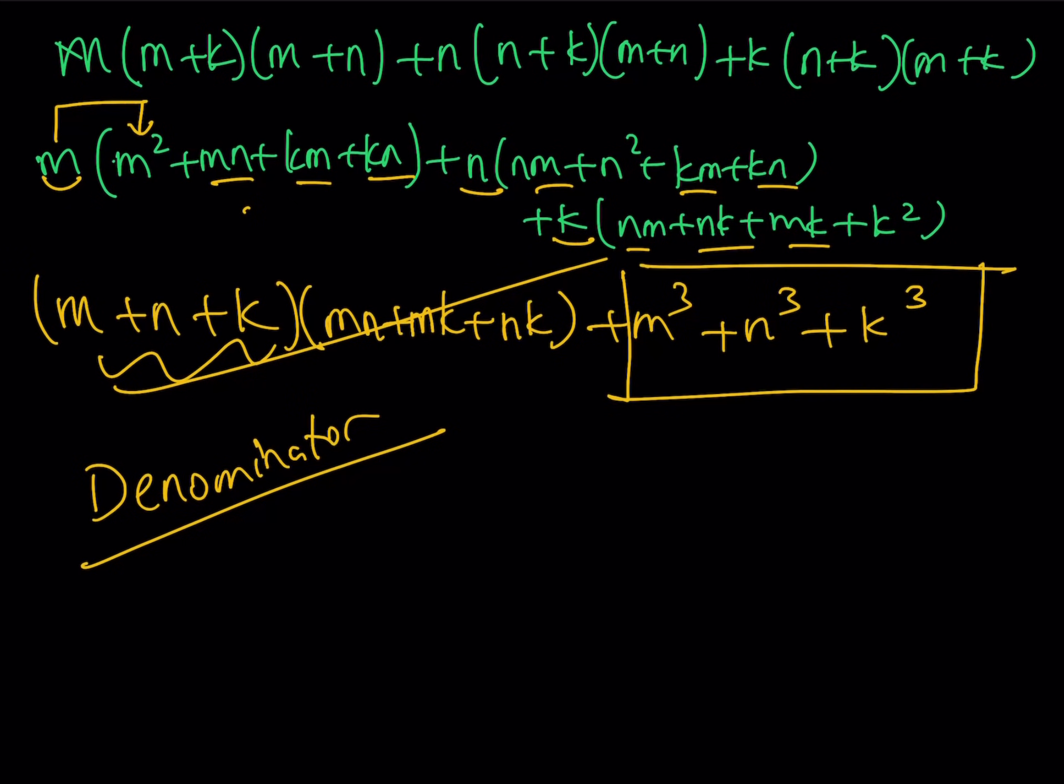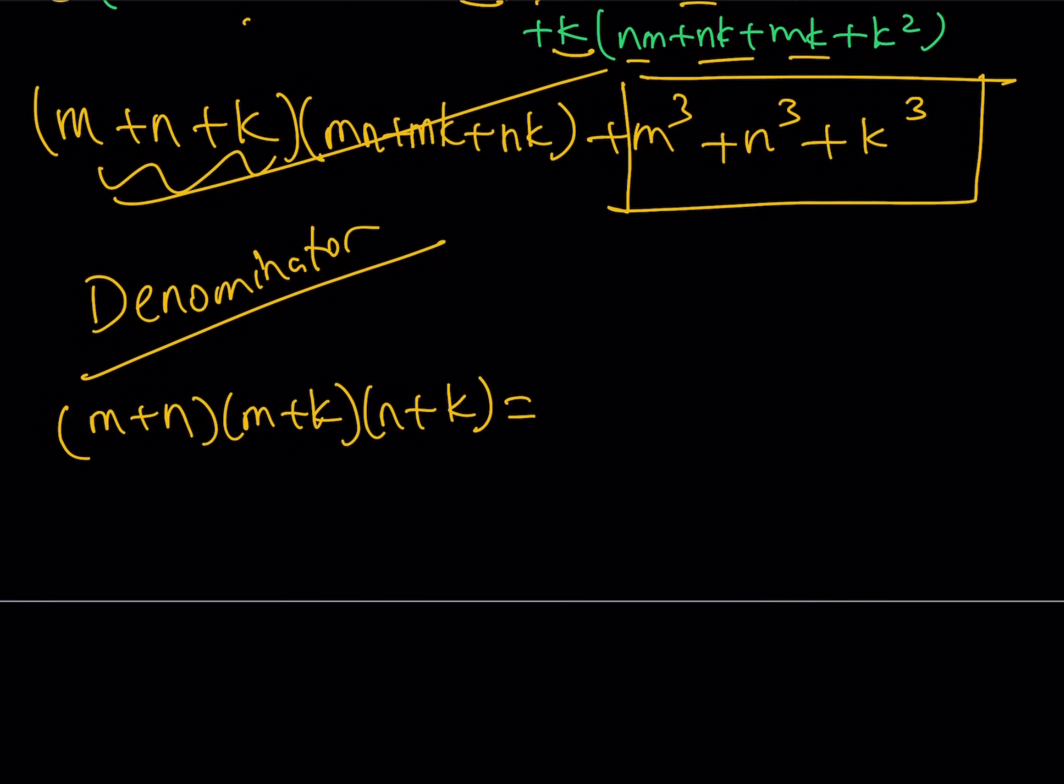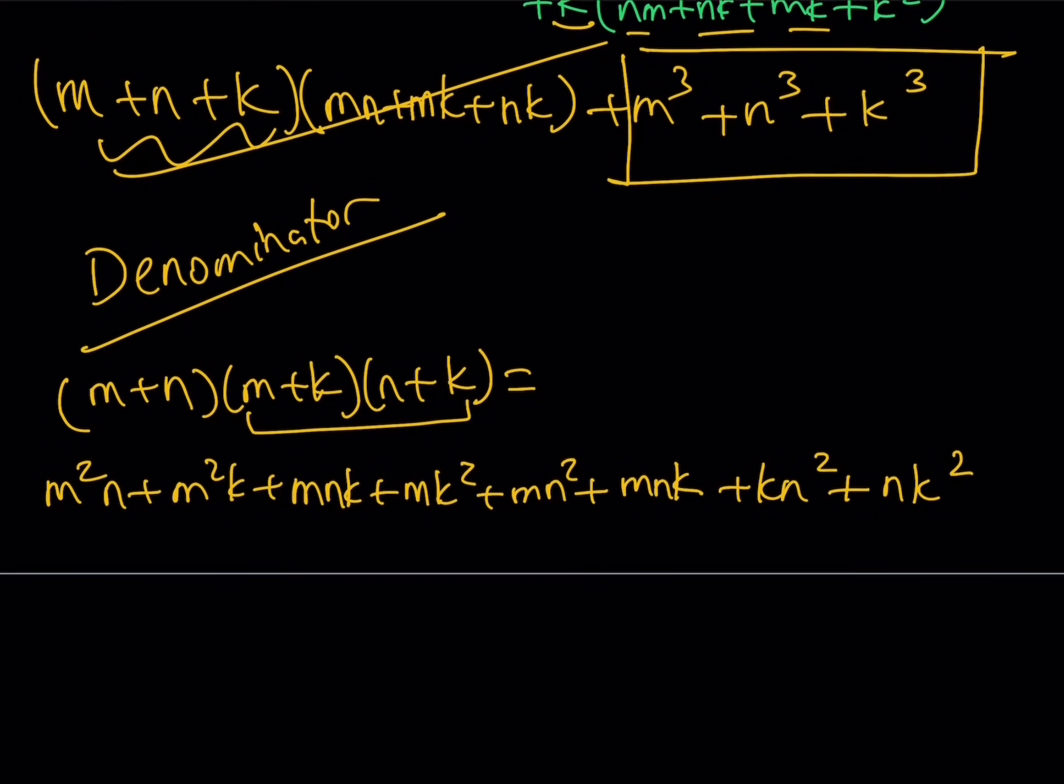So in the denominator, we basically have M plus N multiplied by M plus K, and that is multiplied by N plus K. Now, when we distribute this, obviously, we're going to get something like this. Let me go ahead and write that down here because I don't think it's going to fit. We're going to get something like M squared N plus M squared K plus MNK plus MK squared plus MN squared plus MNK, and now we'll have KN squared and NK squared. So we're supposed to have eight terms here because two times two times two equals eight.